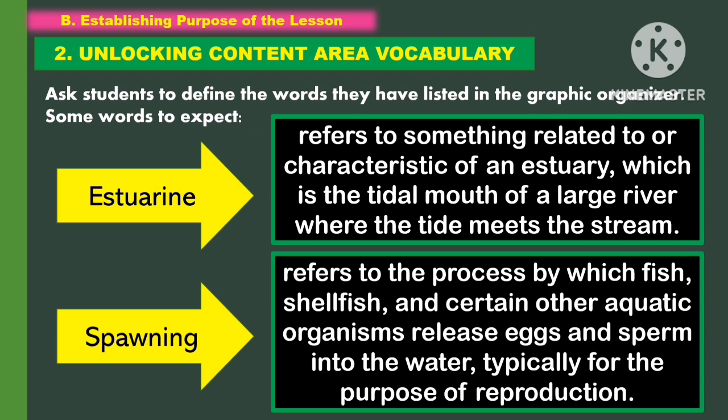For unlocking of content area vocabulary, ask the students to define the words they have listed in the graphic organizer. The first word is estuarine — it refers to something related to or characteristic of an estuary, which is the tidal mouth of a large river where the tides meet the stream. Another word is spawning — it refers to the process by which fish, shellfish, and certain other aquatic organisms release eggs and sperm into the water, typically for the purpose of reproduction.